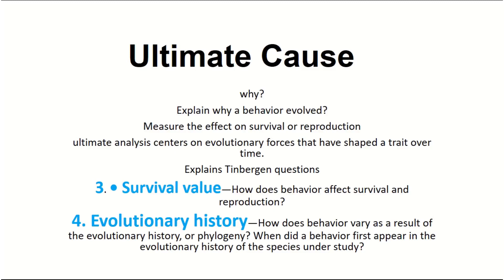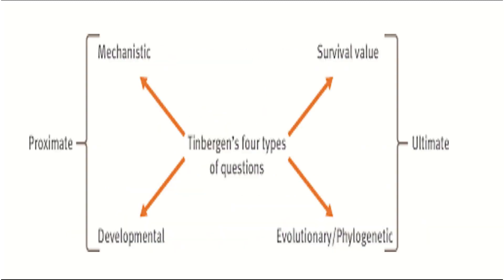The evolutionary history question asks how behavior varies as a result of evolutionary history or phylogeny, and when a behavior first appeared in the evolutionary history of the species under study. In summary, proximate analysis explains the mechanistic and developmental questions, while ultimate analysis explains the survival and evolutionary or phylogenetic questions — making four total questions of behavior.